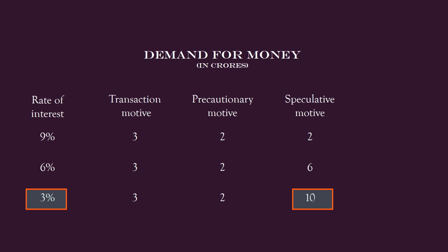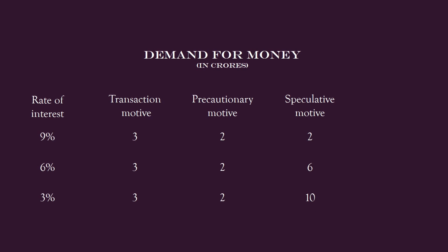Why is the demand for money low at a high level of interest? The current rate of interest is high because bond prices are low. The possibility of any further fall in bond prices is less. Even if prices fall, the community strongly believes the fall will be minimum and cannot be very large. So the community feels it is enough to keep less money to buy bonds. For different interest rates, the quantity of money held under speculative motive differs, but the demand for money is less at high interest and more at low interest.